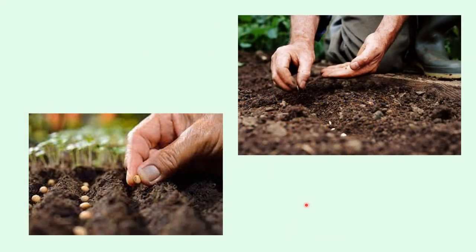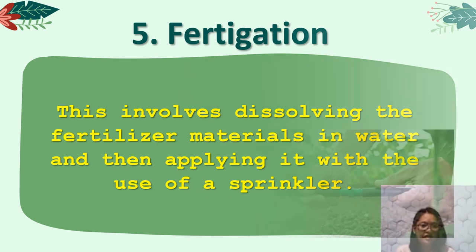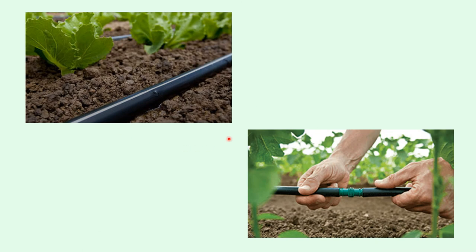This illustrates applying fertilizer with the seed. And number five, we have fertigation. This involves dissolving the fertilizer materials in water and then applying it with the use of a sprinkler. This picture illustrates the fertigation method.